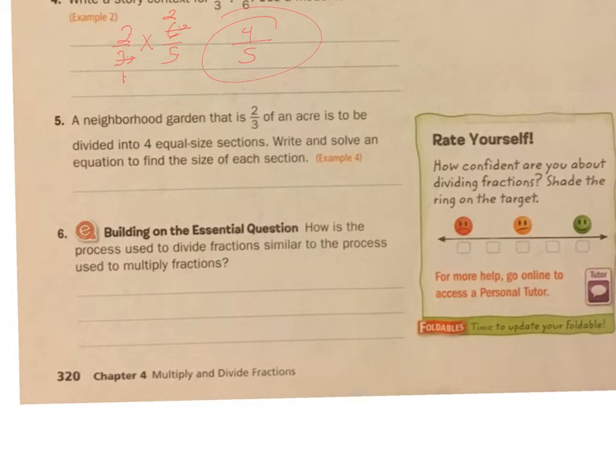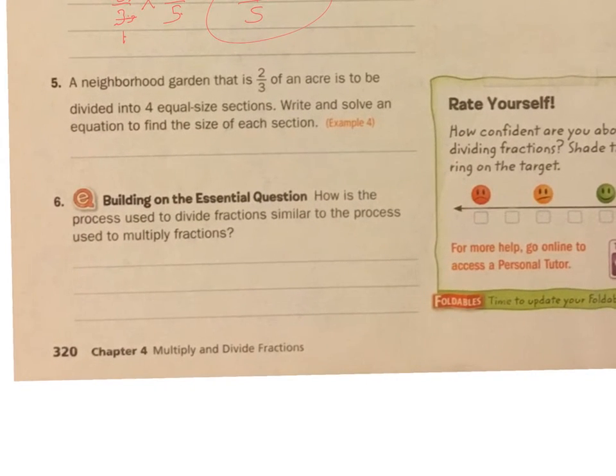Now let's go down to number 5. A neighborhood garden that is 2 thirds of an acre is to be divided into 4 equal size sections. So I'm going to start with my 2 thirds of an acre and I'm going to divide it into 4 equal sections.